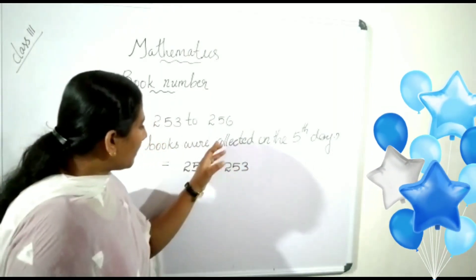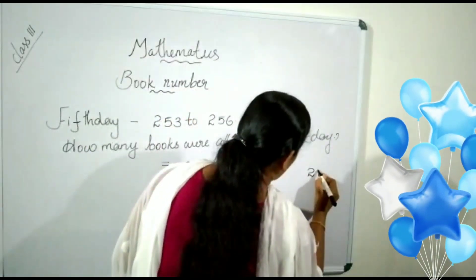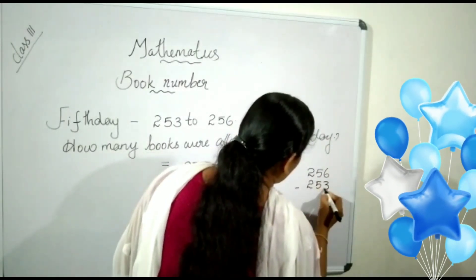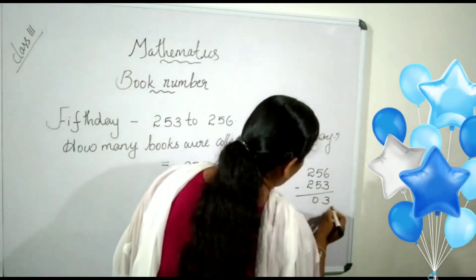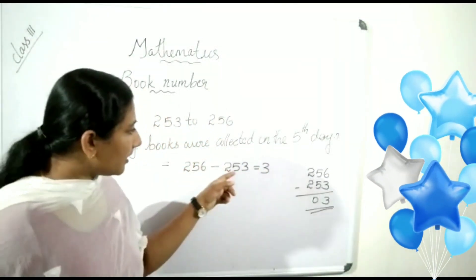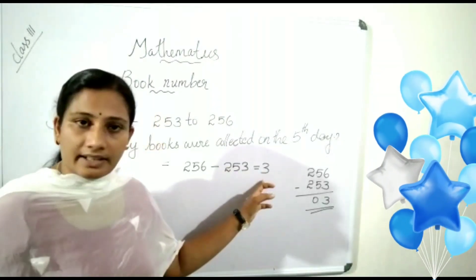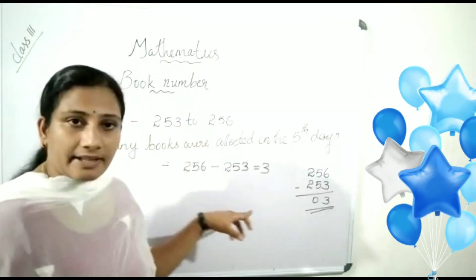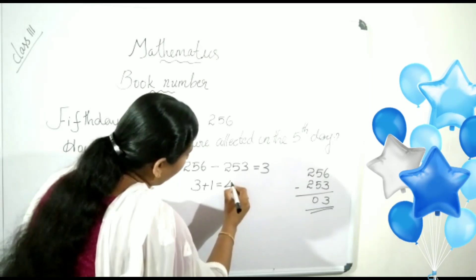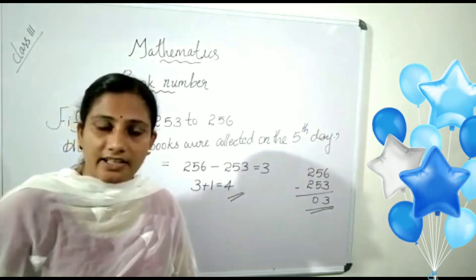Let us subtract the small number from the big number. So, 256 subtract 253. Here, the answer is 3. Then, they arranged 3 books. Is it right? No. It is not the correct answer. So, when we subtract like this, just add 1 with this number. Then, we get 4. They arranged 4 books.